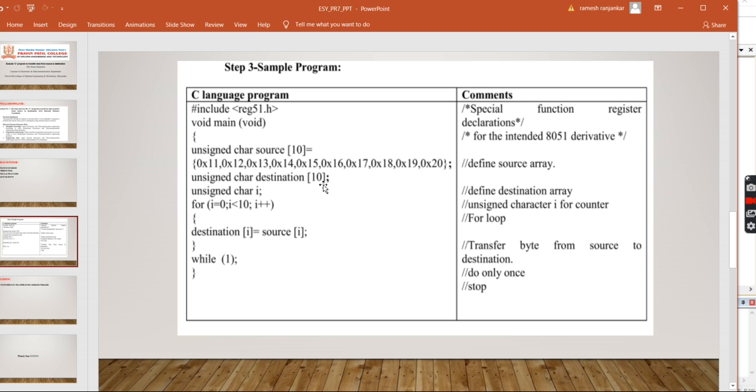Then, unsigned character destination, आपका destination array, अगर आपका source array 10 numbers का है, तो आपका destination array भी 10 numbers का ही होना चाहिए. यह जो numbers है, यह दोनों आपके match होने चाहिए, यहाँ पर variation नहीं होना चाहिए. So, here unsigned character destination of 10 numbers.